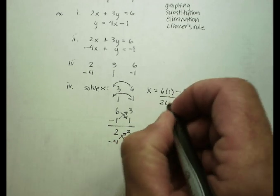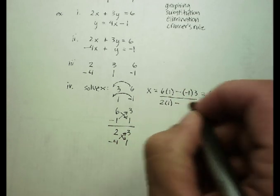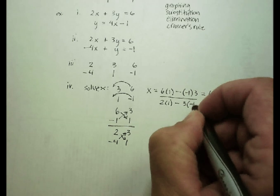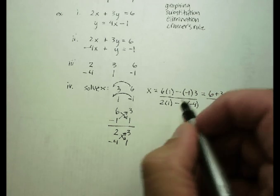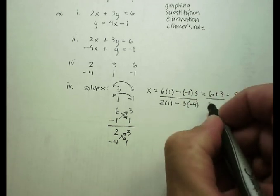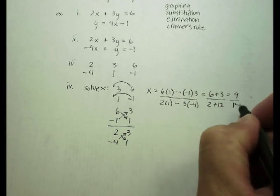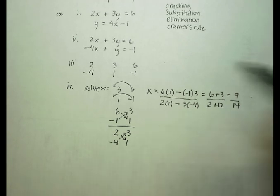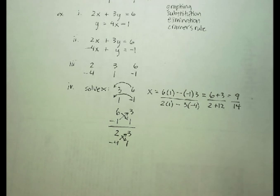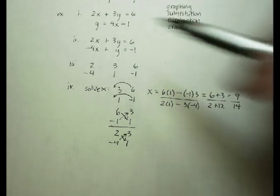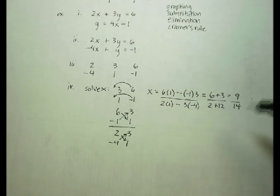You have 2 times 1, minus 3 times negative 4. That's going to give me 2 plus 12, or 14. And that's the x value for where these two lines intersect, at 9 14ths.